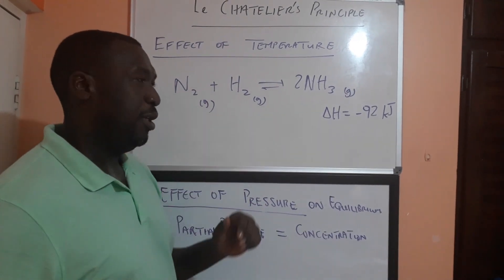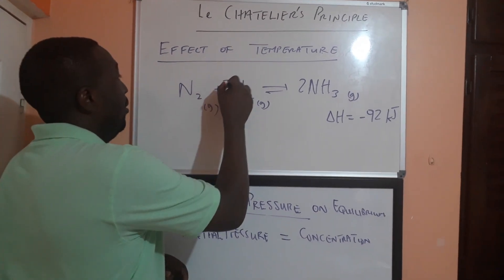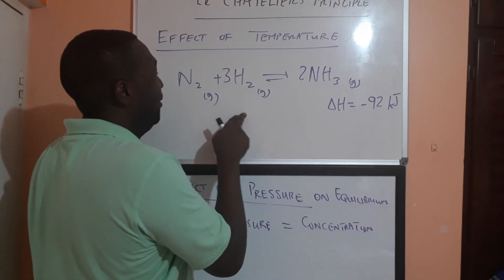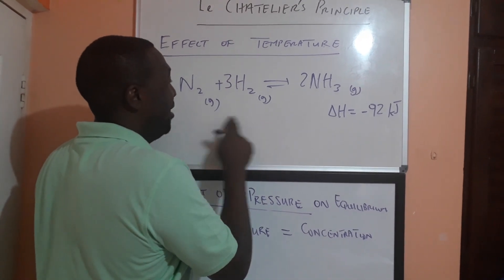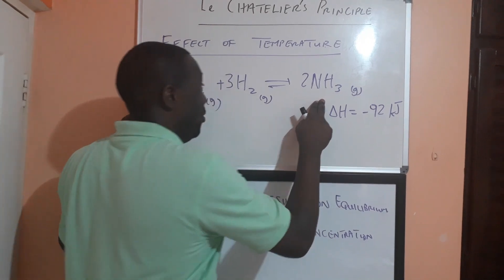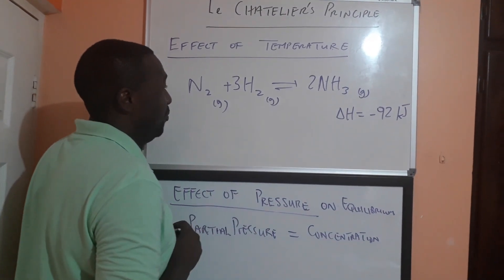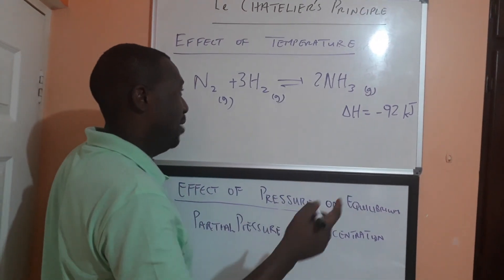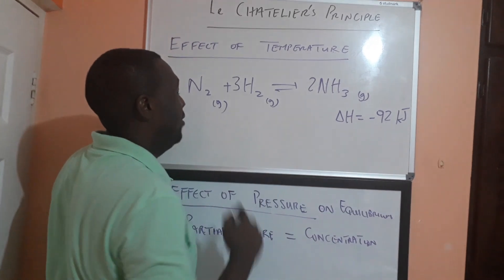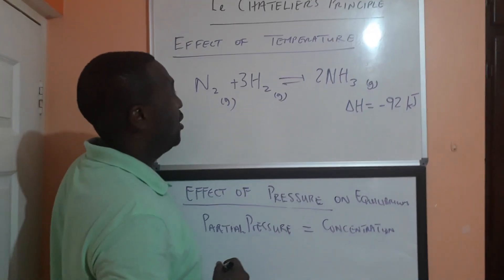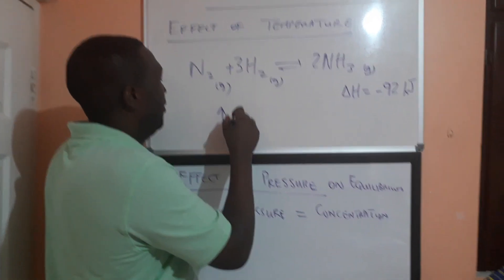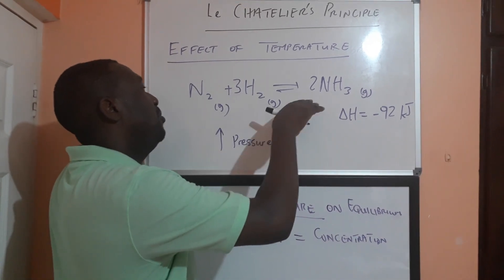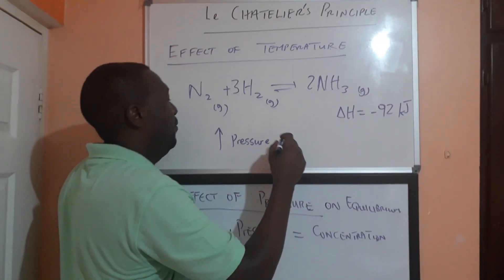Looking at the same example — production of ammonia from nitrogen and hydrogen — we see that on the left-hand side we have four molecules of gas, and on the right-hand side we have two molecules of gas. So if we want to produce more ammonia and increase the proportion of ammonia in the equilibrium, we would increase the pressure, because that would shift the equilibrium to the side with just two molecules instead of four.